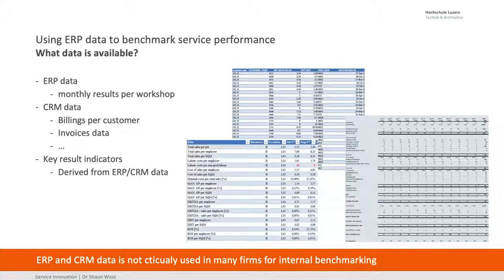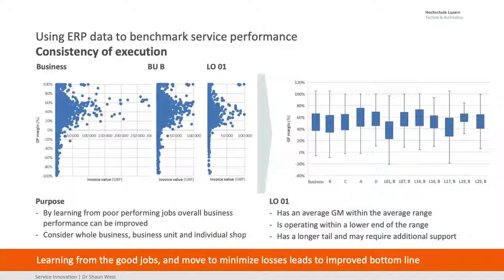Monthly ERP data is great. CRM data is great. You have to be able to combine and mash it up so you can really understand what's going on. If you don't understand what's going on, your business will be out of control. Look at it on a business level, business unit level, and then location level — follow that through to see whether the location follows the business unit trend and whether the business unit differs from the business average.